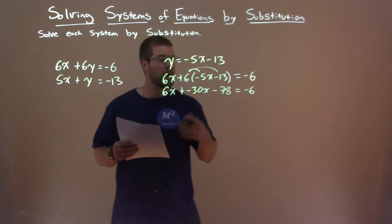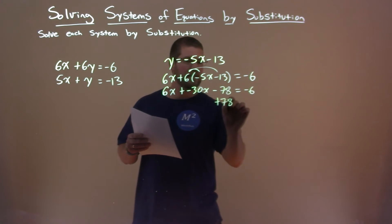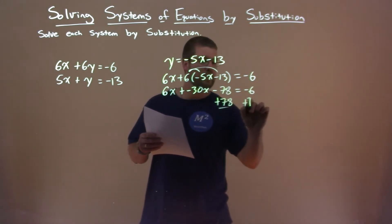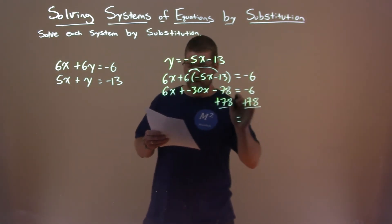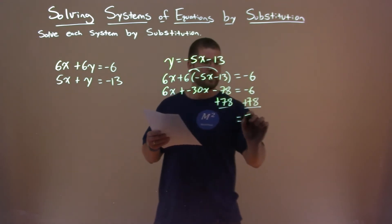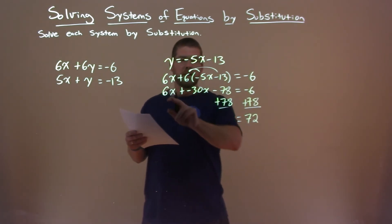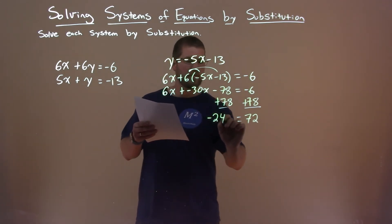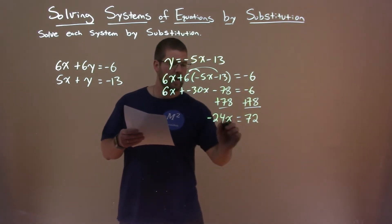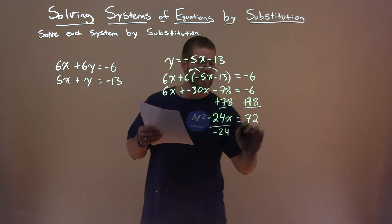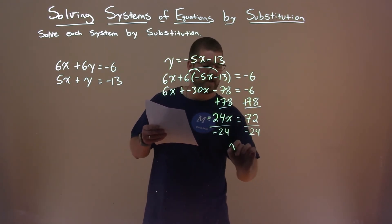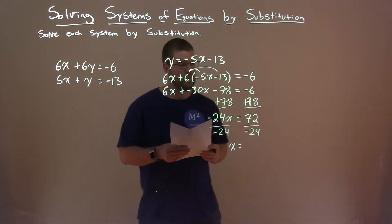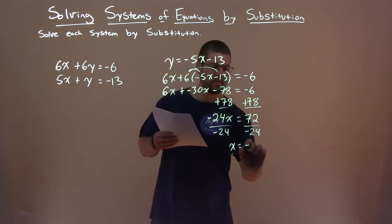From there, we want to combine our like terms. We add 78 to both sides here, and negative 6 plus 78 is 72. Here, 6x plus negative 30x is minus 24x. Divide both sides by minus 24 to get x by itself, and x equals 72 divided by negative 24 is minus 3.